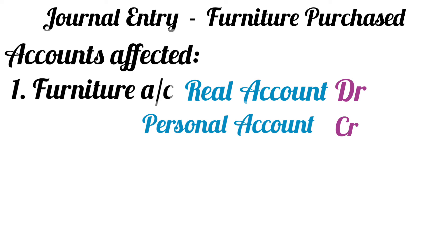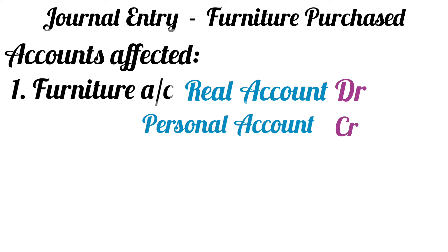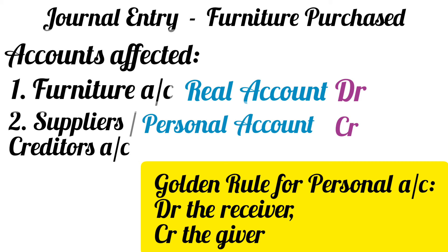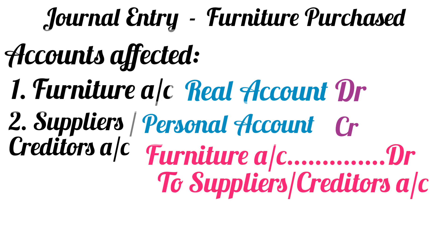In this case, the bank account will be replaced by the supplier's account or the creditor's account. The supplier or creditor's account will be a personal account. One who supplies goods to us on credit becomes our creditor. The golden rule for personal accounts is debit the receiver, credit the giver. When you purchase furniture on credit, that supplier or creditor is the giver, so his account will be credited. The journal entry will be furniture account debit to supplier or creditor's account.